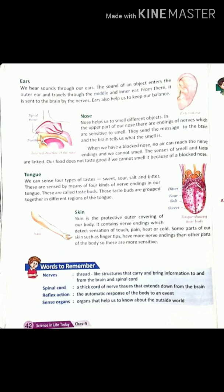Next topic: ears. Ears are also very important sense organs. We hear sounds through the ears. Sound enters the outer ear and travels through the middle and inner ear, from where it is sent to the brain by nerves. In the inner ear, the eardrum vibrates when sound waves travel through the air, and nerves send the message to the brain. Ears also help us keep our balance.